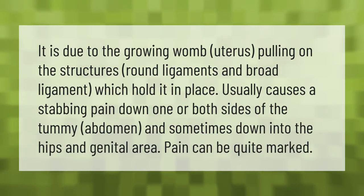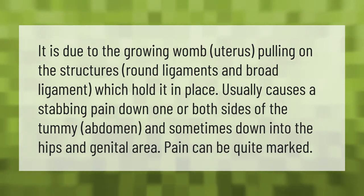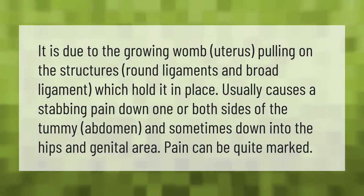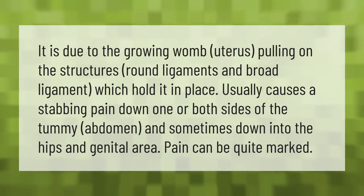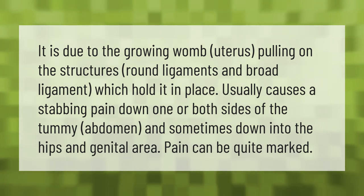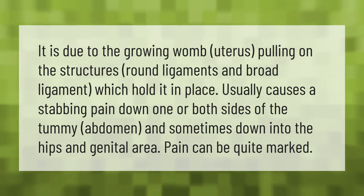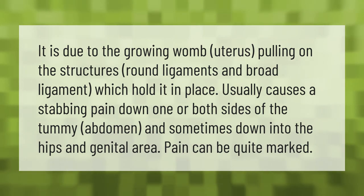Pain can be due to the growing uterus pulling on the round ligaments and broad ligament which hold it in place. This usually causes a stabbing pain down one or both sides of the abdomen, and sometimes down into the hips and genital area. Pain can be quite marked in places.